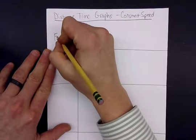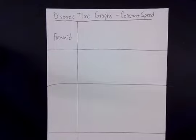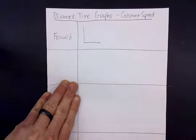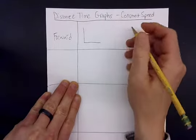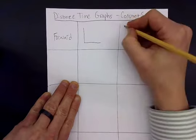So let's start with just looking at an object traveling forward. Forward was what we called away from the motion detector. So draw a graph there, we'll give a little description next to it.